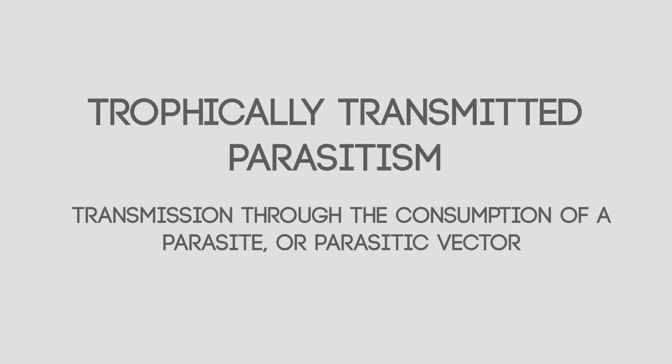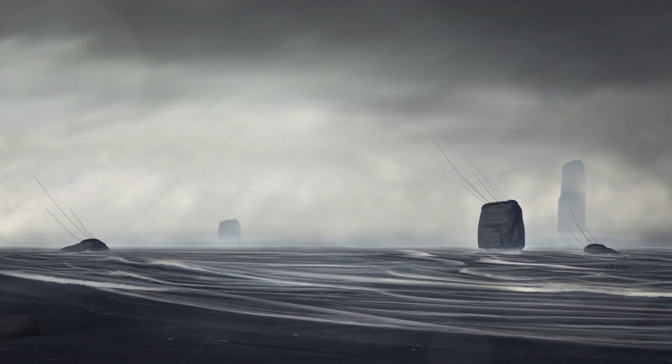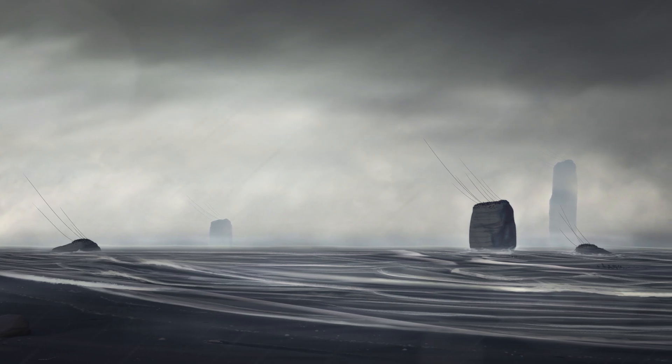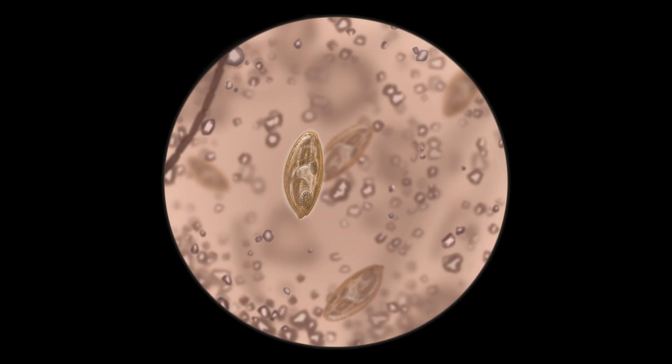For our example of trophically transmitted parasitism — that is, a parasite that is transmitted through the feeding of the host — we turn our focus toward the windswept, rain-soaked mudflats of Isla's coast. Here dwells a microscopic organism known as Schistomyces chrysochroma. This tiny creature's eggs are partially motile and commonly dispersed in the sedimentary layers of the intertidal zone.